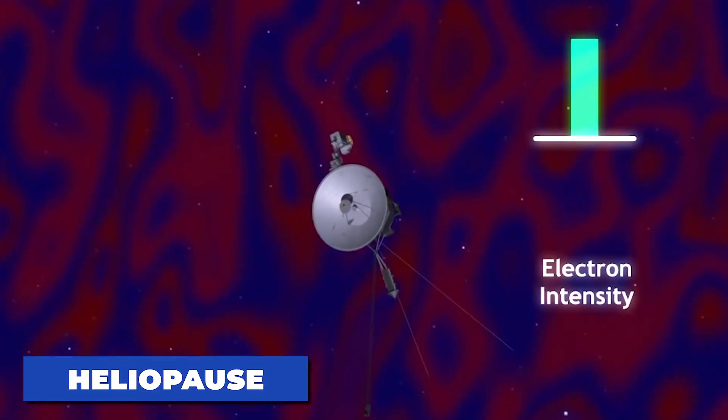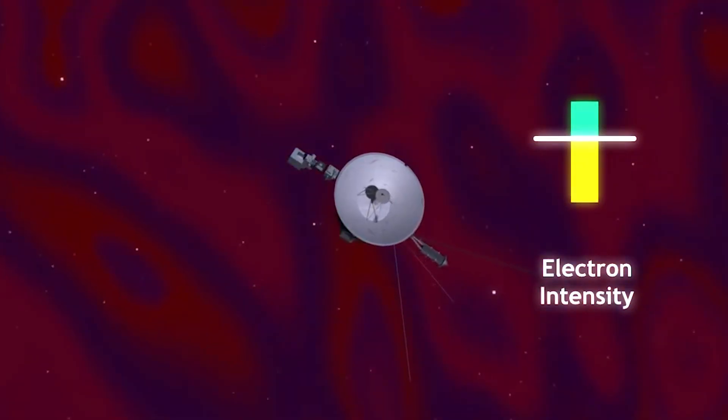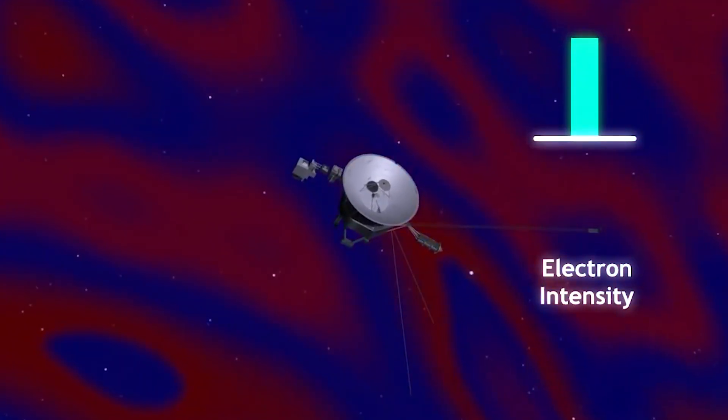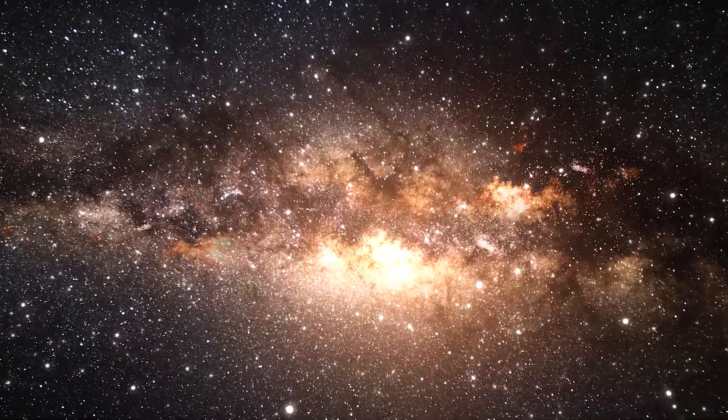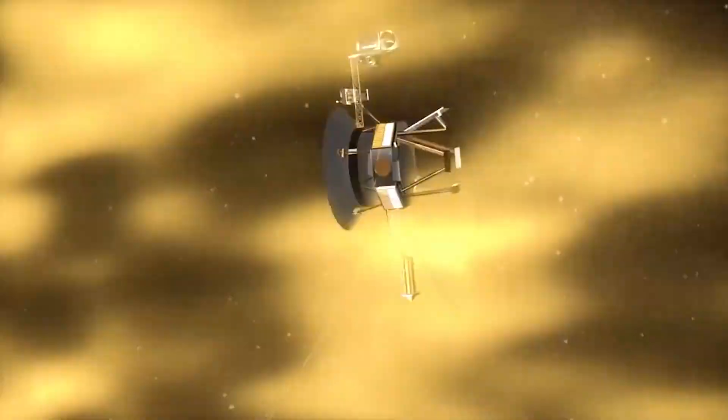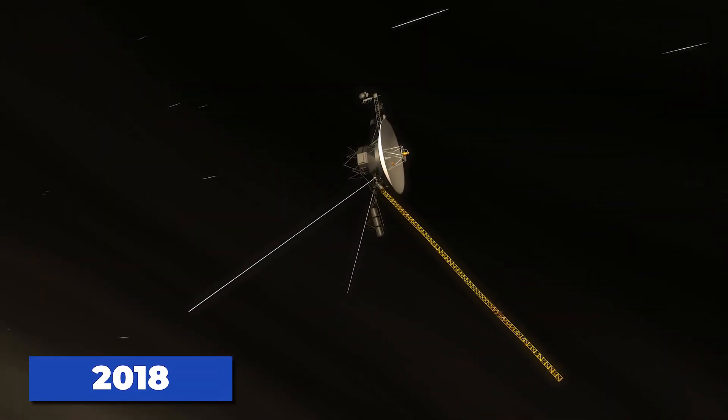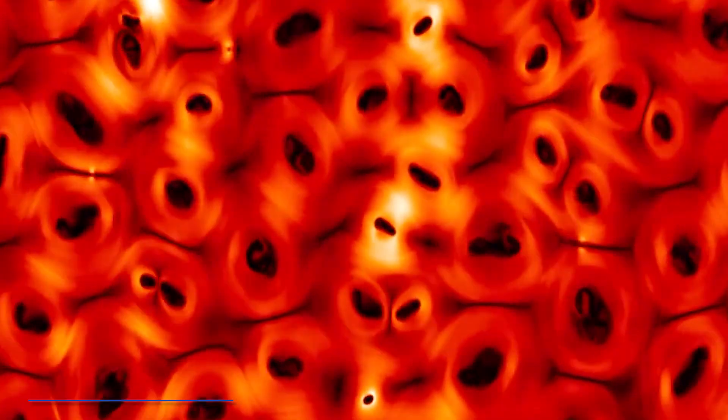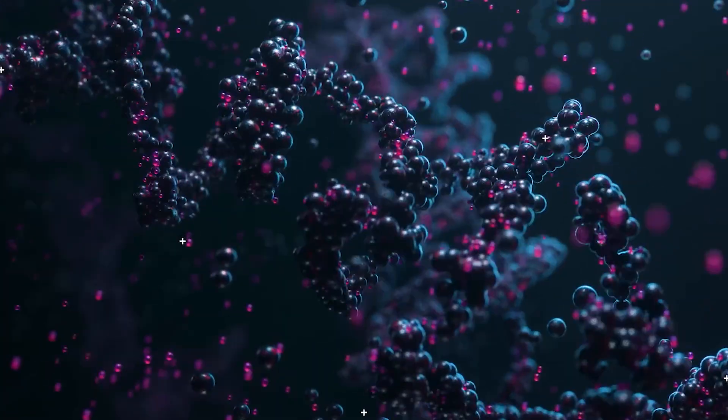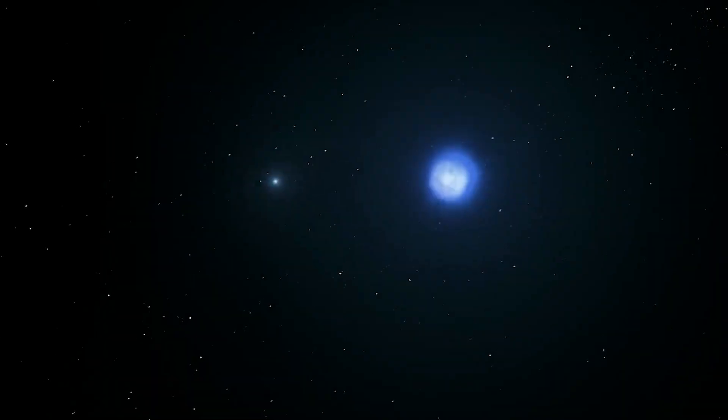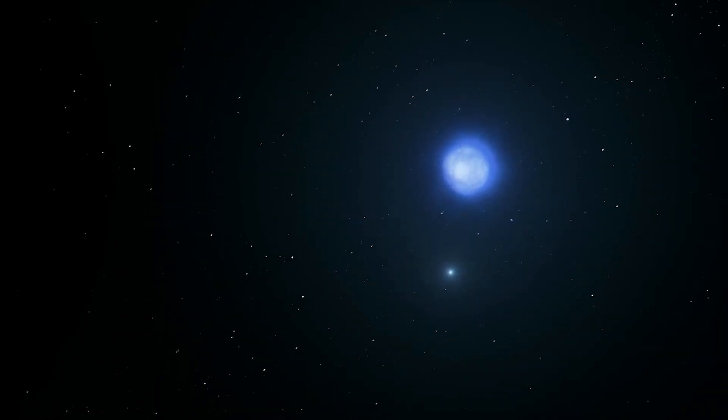Voyager 1 and Voyager 2 were the first spacecraft to cross the heliopause and enter interstellar space. Voyager 1 crossed the heliopause in 2012, while Voyager 2 crossed it in 2018. The two spacecraft provided unprecedented data about the nature of the heliosphere and the interstellar space beyond.